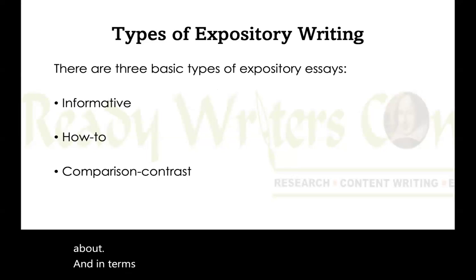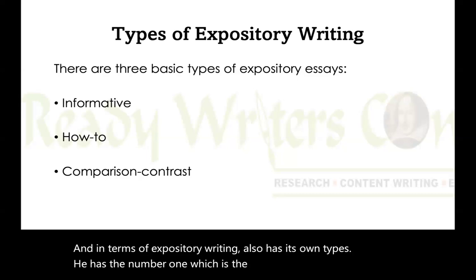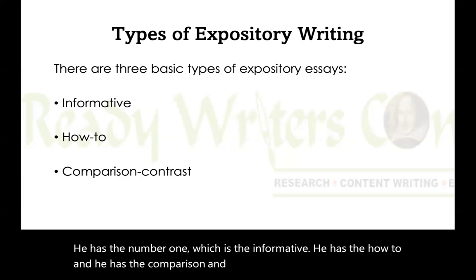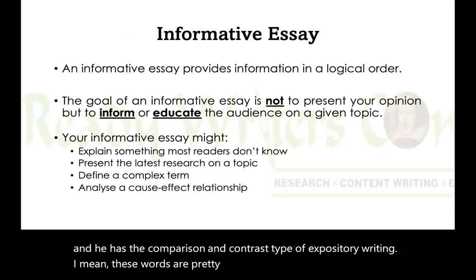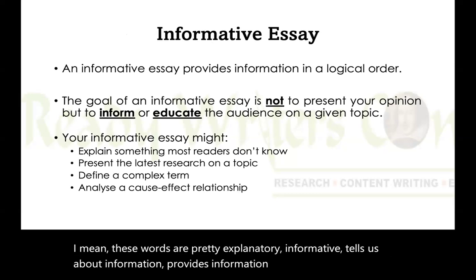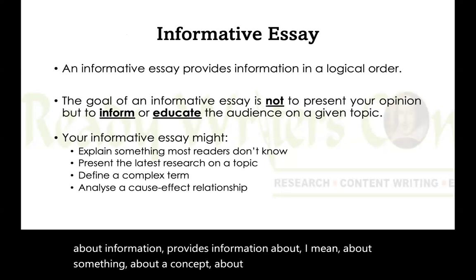Expository writing has its own types. Number one is informative — it provides information about a concept, somebody, or an event in a very logical sequence. The how-to type, and the comparison and contrast type of expository writing. These words are pretty self-explanatory. Informative tells us about information, provides details about something or somebody in a logical sequence.